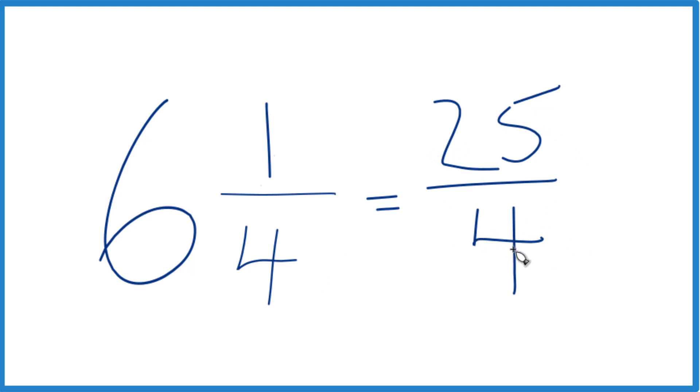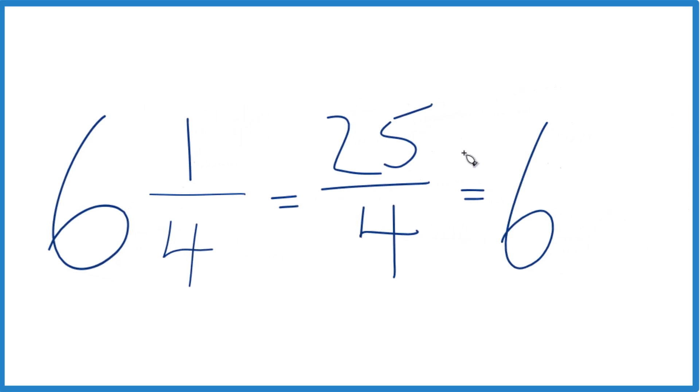You can even check your work, because 4 goes into 25, 6 times, 6 times 4 is 24, and we'd have 1 left over. Bring the 4 across, and we get 6 and 1/4th, and that's what we started out with, so we know we did this correctly.